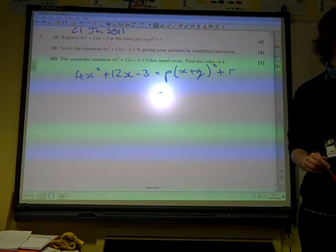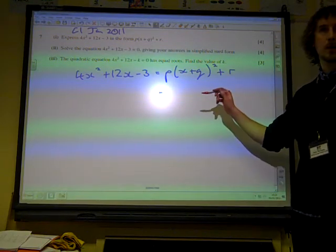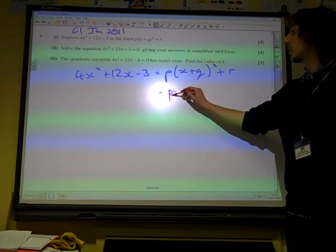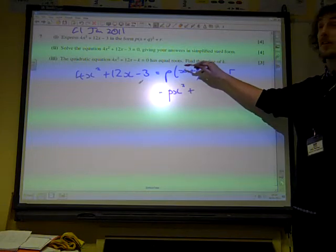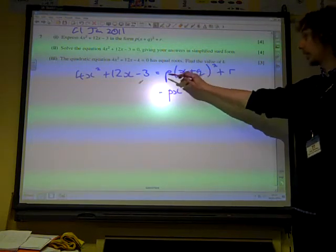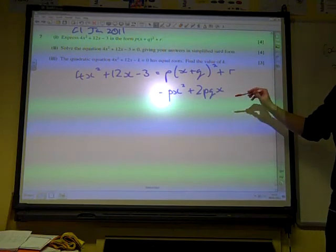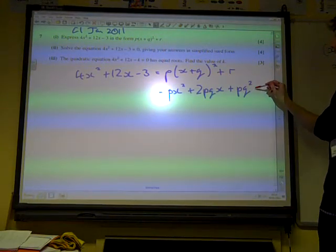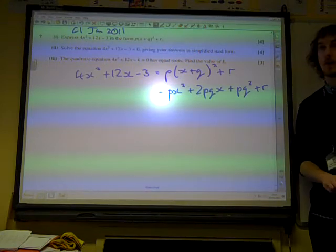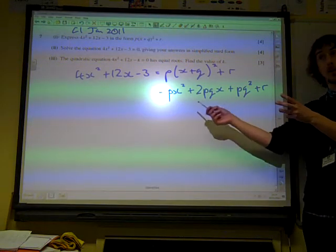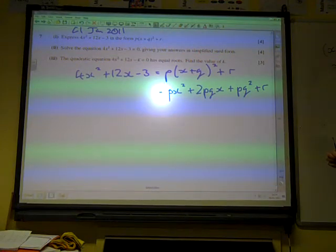So we're just going to carefully multiply this out. What do we get? px squared plus 2pqx, so we get 2qx. We're times about p, so 2pqx, plus pq squared plus r. So we've got that, and that's a fairly standard thing.